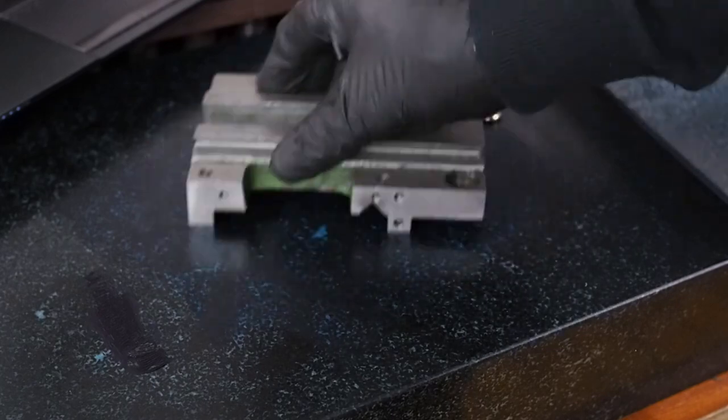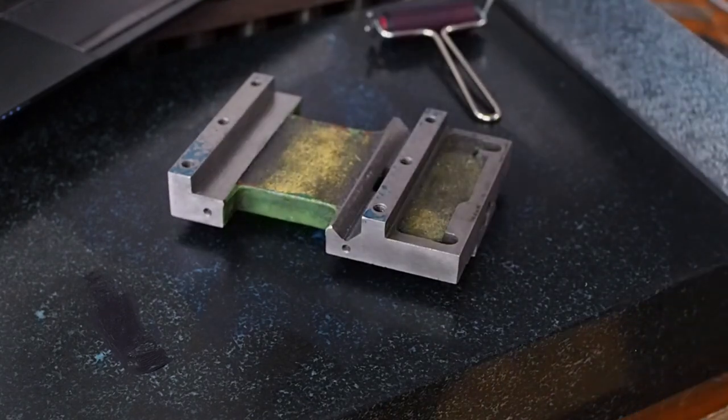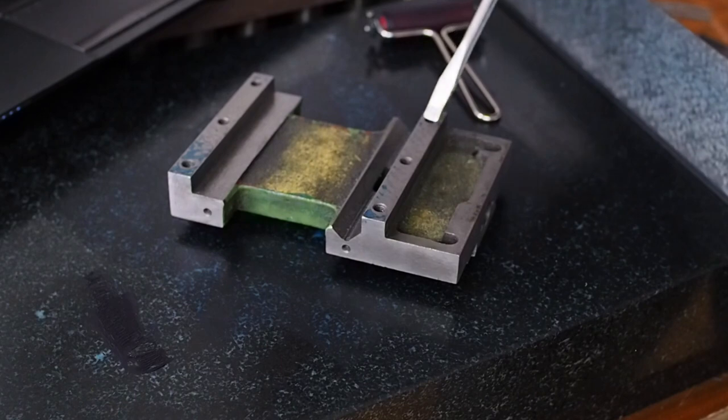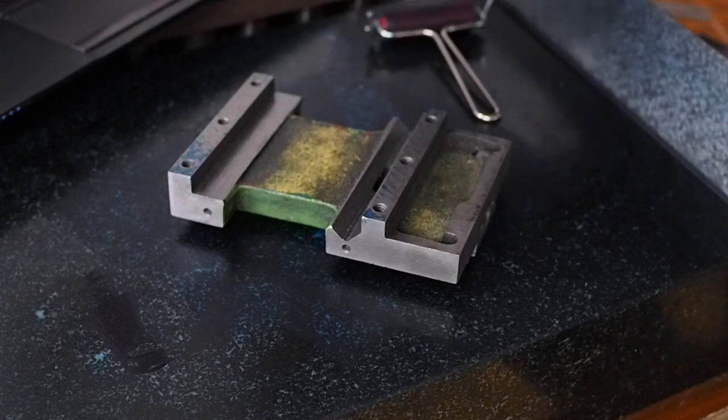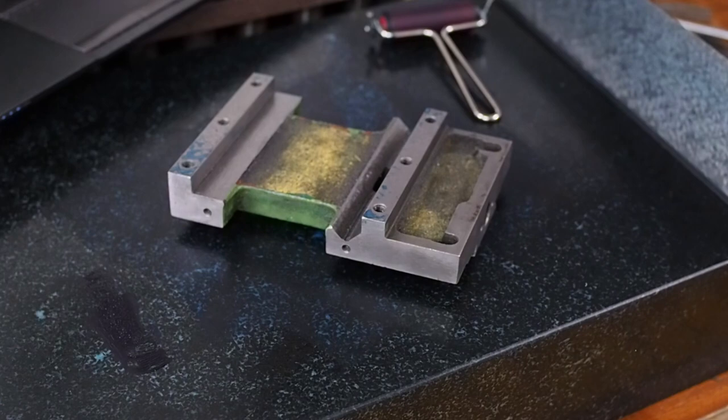So after a first roughing pass with the scraper we still pretty much only have contact on the ends, so we still need to do more through these ends. This is already starting to widen up and we're getting a bit of contact on that edge. I'll bring you back once I've finished the scraping on this part.